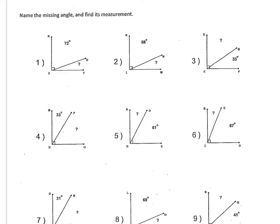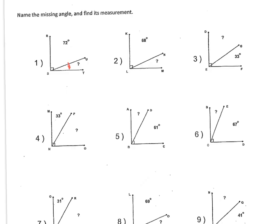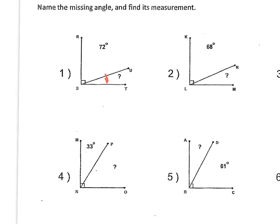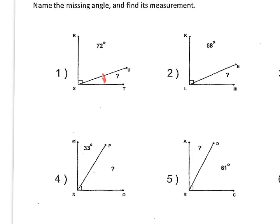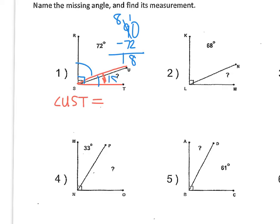Looking at number 1, the missing angle is angle U-S-T — tracing from U to S to T. The two angles together make a 90 degree angle, as shown by the box in the corner. So we do 90 minus 72, and that tells us the remaining angle is 18 degrees. So angle U-S-T is 18 degrees.